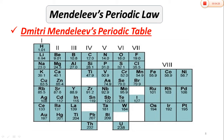Mendeleev created groups: first, second, third, fourth, fifth, sixth, and seventh. These are the main groups. There are also transition elements. Elements with the same properties were placed in the same group.